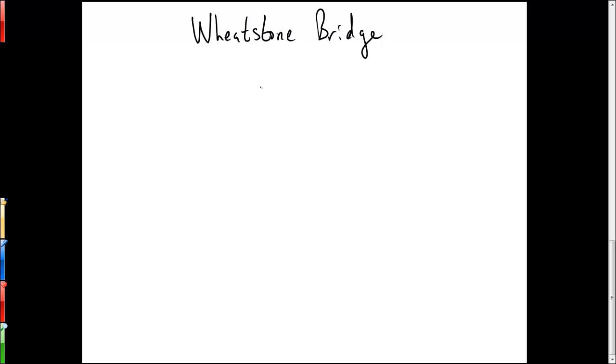A Wheatstone bridge works as follows. We have an excitation voltage, which I'll call VEX, and we run it through several resistors arranged as such, where we have a ground down here. If each one of these resistors is some nominal resistance R, then we know that the voltage at this node here, which we'll call V1, and the voltage at this node here, which we'll call V2, will be the same.